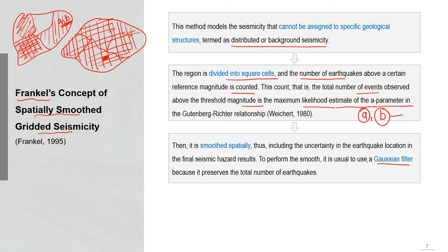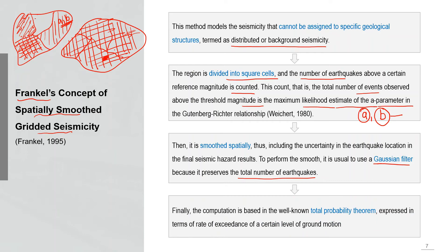The Gaussian filter is applied to smooth the historical seismicity because it preserves the total number of earthquakes — the total number of events in the smoothed seismicity equals the actual seismicity. Finally, the hazard integral is applied to each grid cell, calculating the rate or frequency of exceedance for a particular ground motion parameter, just as in the conventional PSHA procedure.